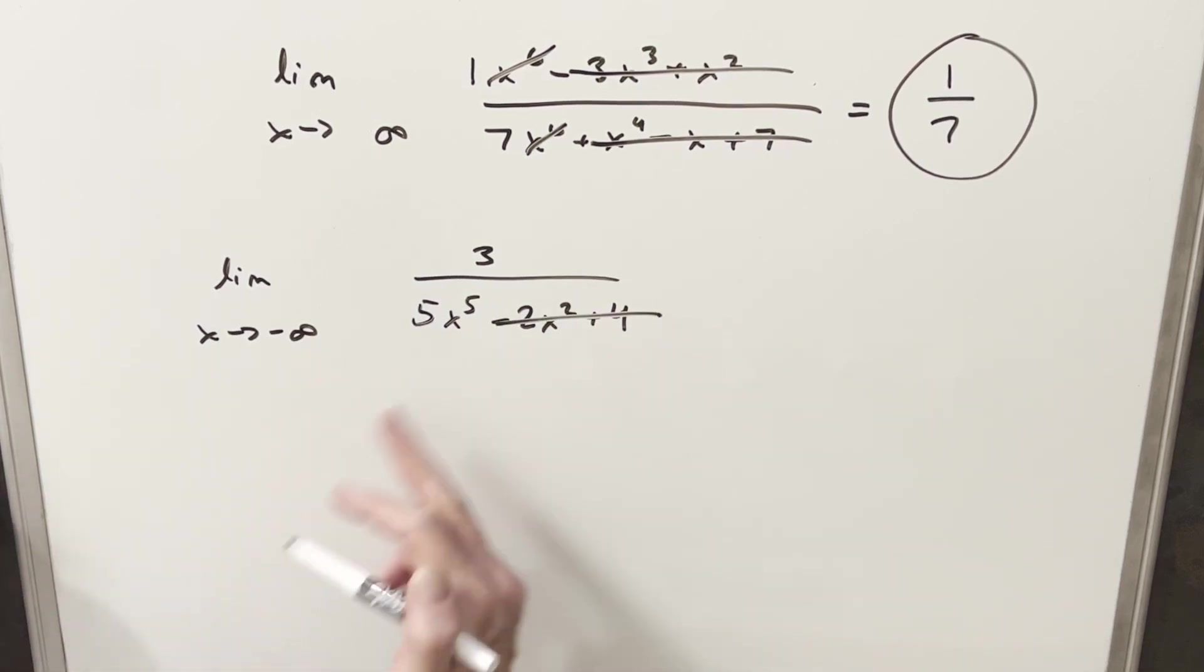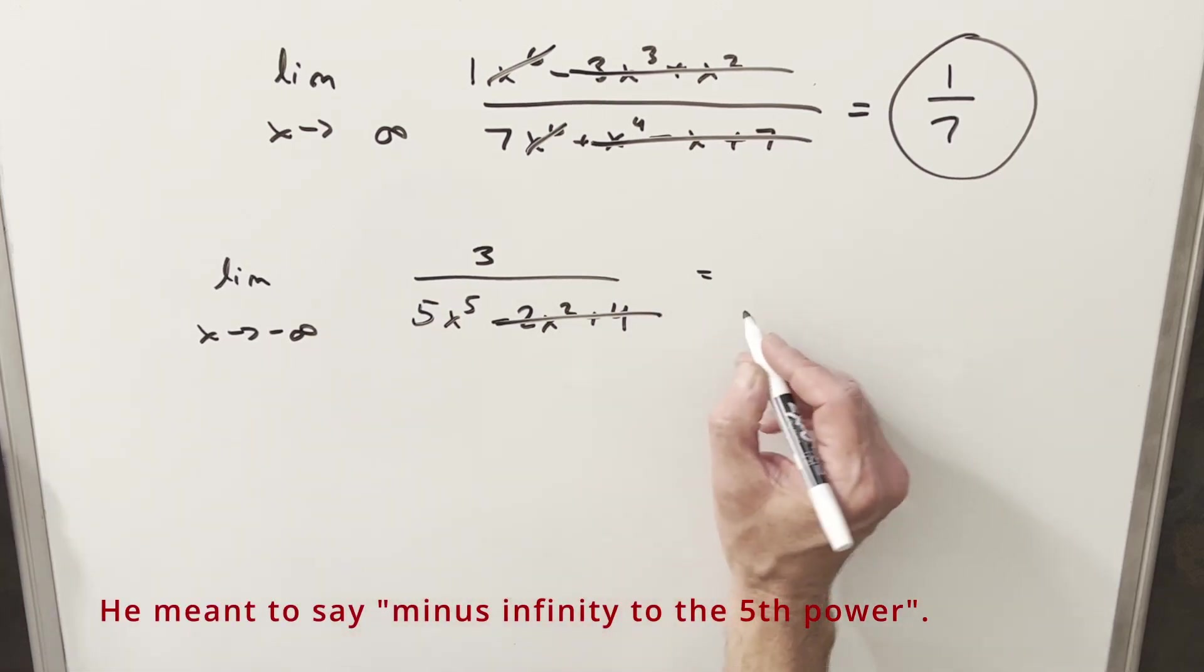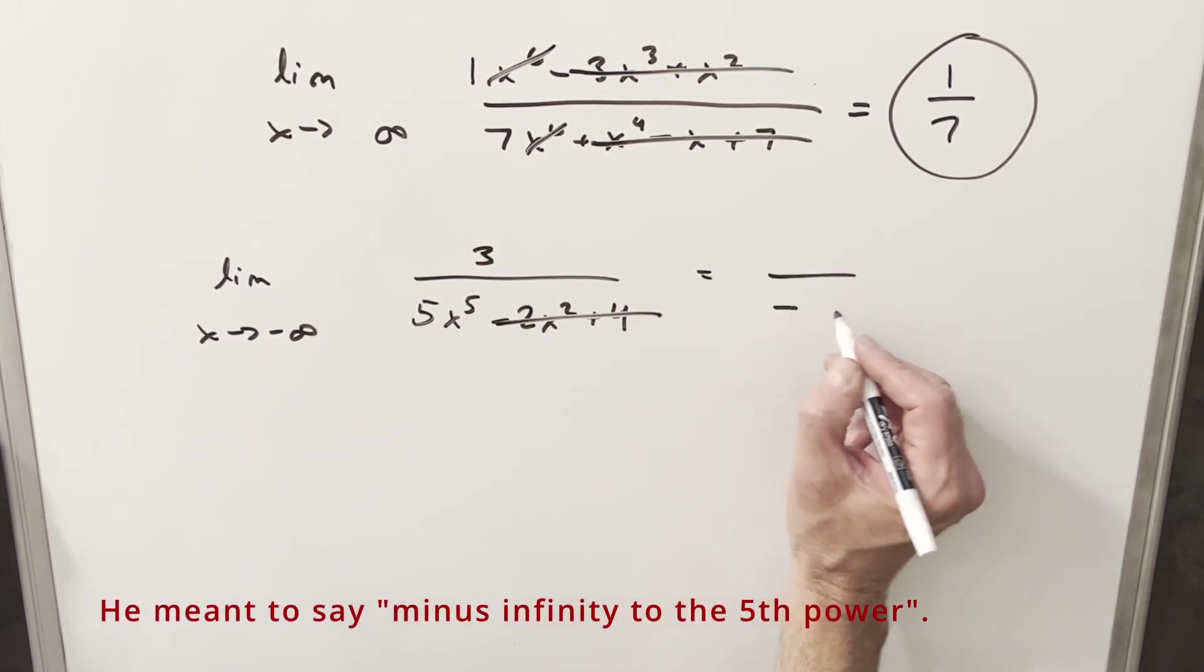We can ignore the lesser degree terms. Now, we just kind of plug in here. If we just plug in minus infinity here, because it's an odd power, we're going to have a minus infinity times 5. So in the denominator, we're going to put minus infinity.